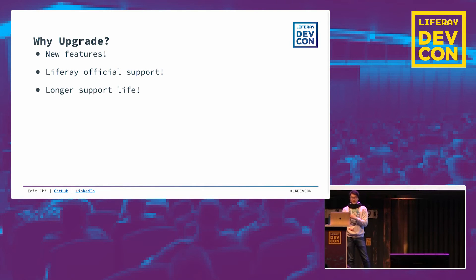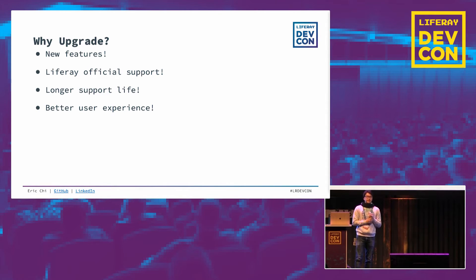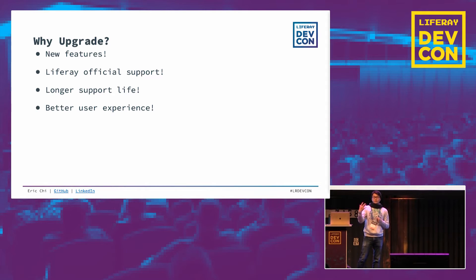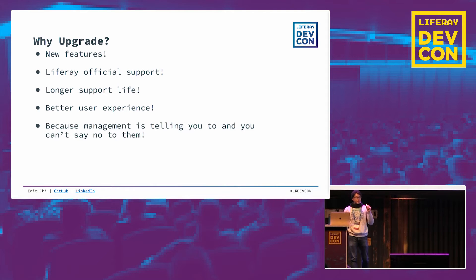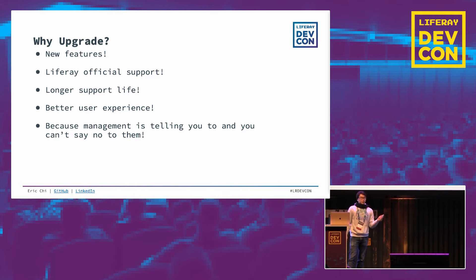Longer support life, as I mentioned. Next is better user experience — when I started doing development on 6.1 and 6.2, the user experience was pretty bad. DXP did a lot of good things to make it better for the user and the developer. And last but not least, your manager is telling you to upgrade. Management wants new features that the sales team promised, and you can't say no or you're out of a job.